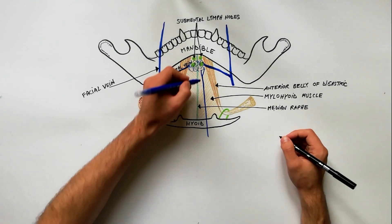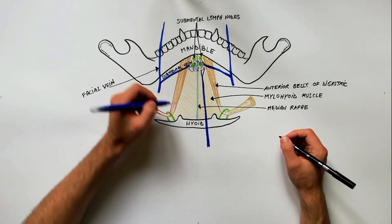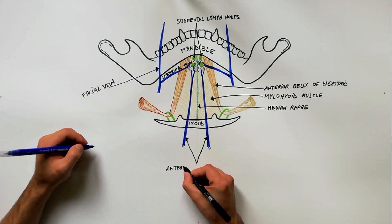Another venous structure present in the Submental Triangle is the commencement of anterior jugular veins.